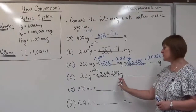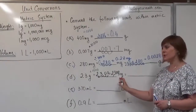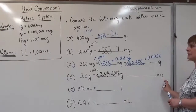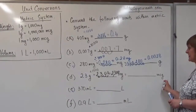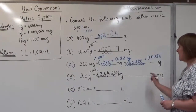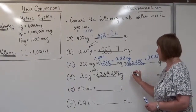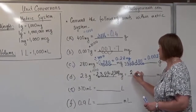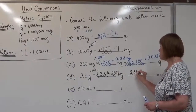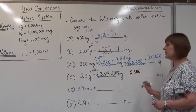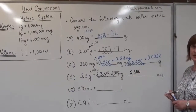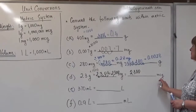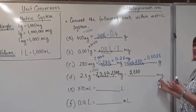We now have 2,300 milligrams, and because we want to convert to micrograms — another smaller unit — we multiply by an additional 1,000.